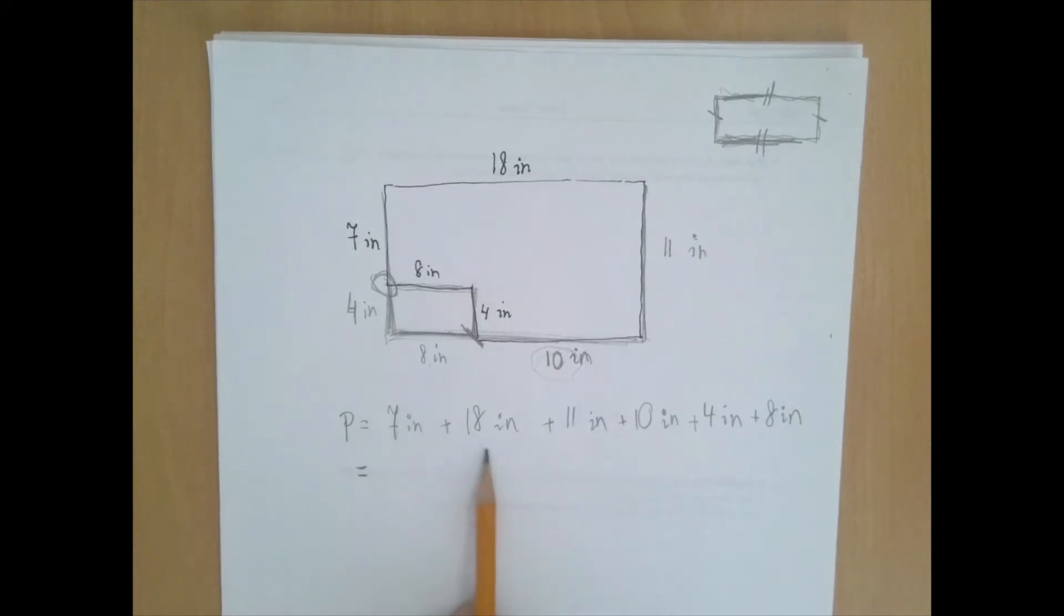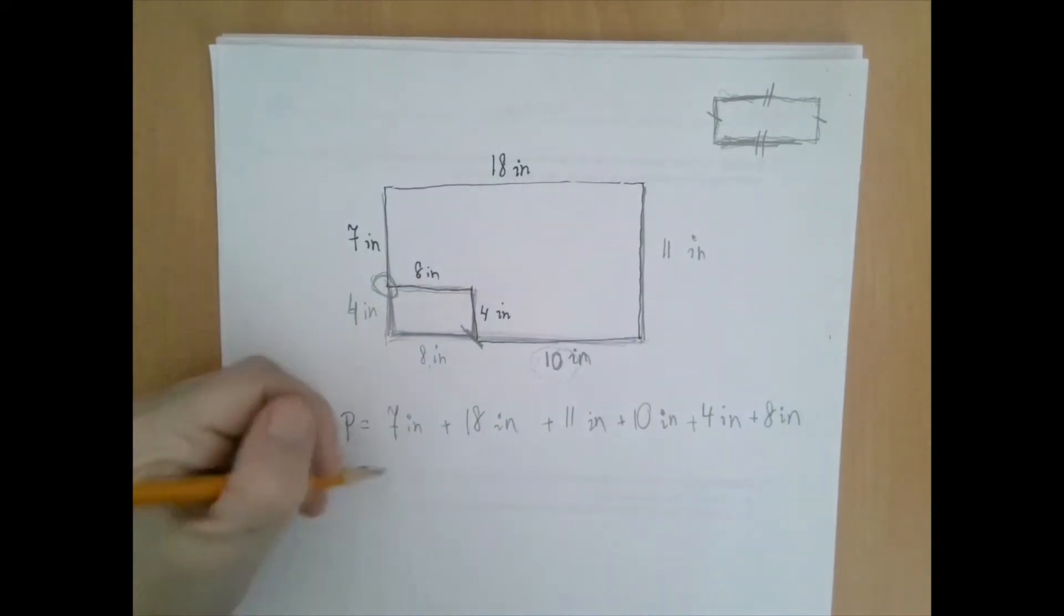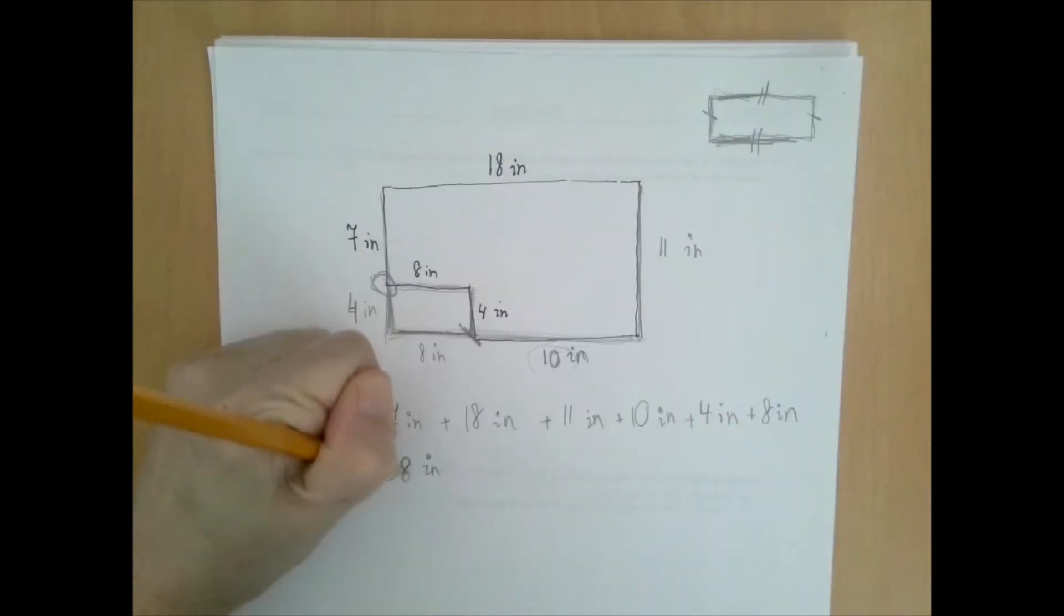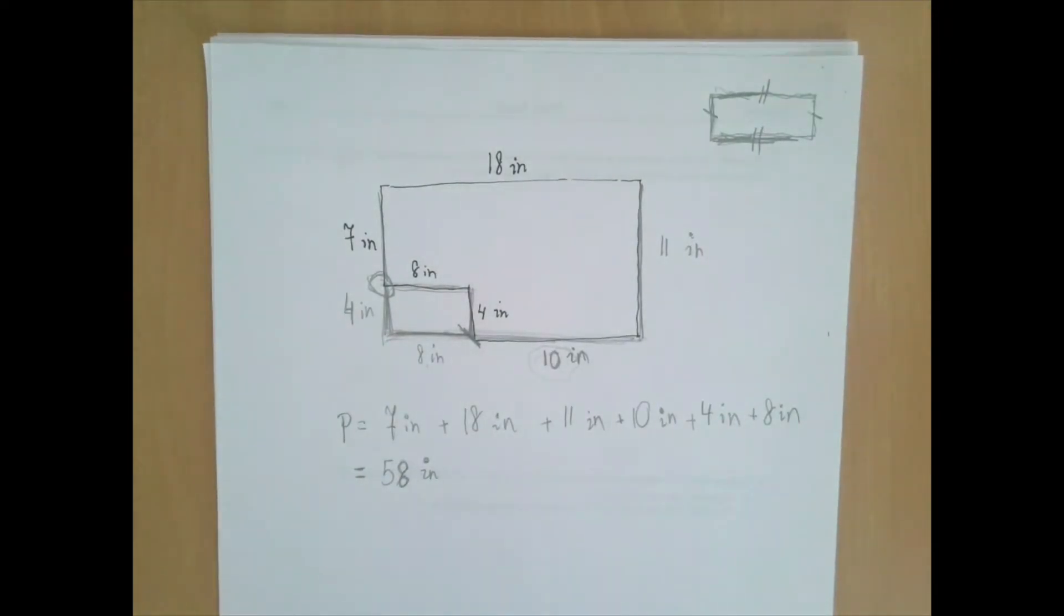7 plus 18, that's 25. Add 11, 36, 46, 50, 58. So the perimeter is 58 inches. Now I promise that both the perimeter and the area is going to be interesting.